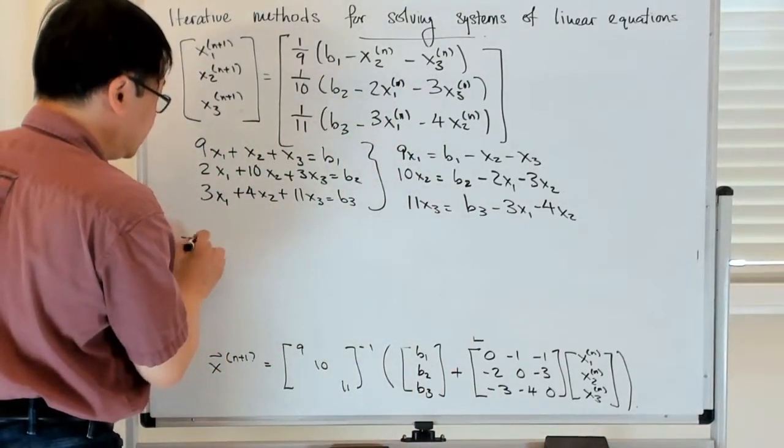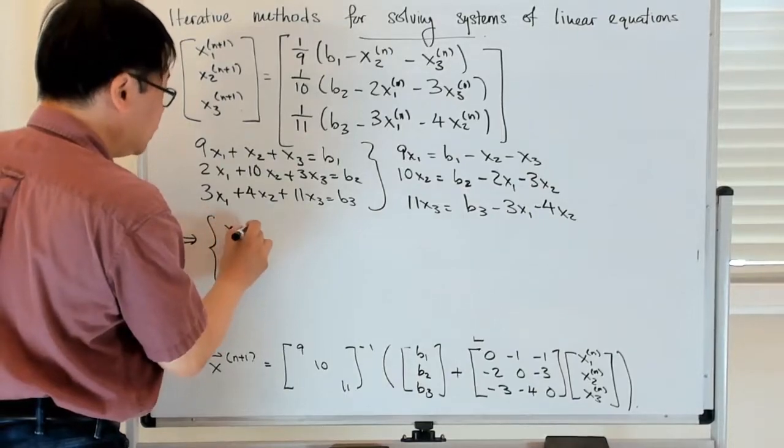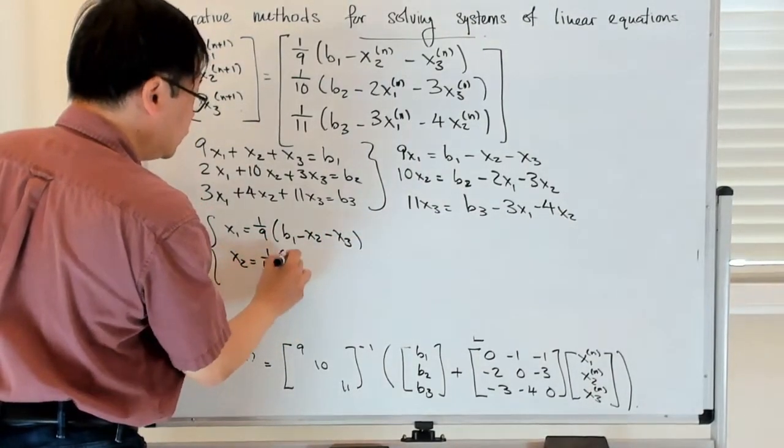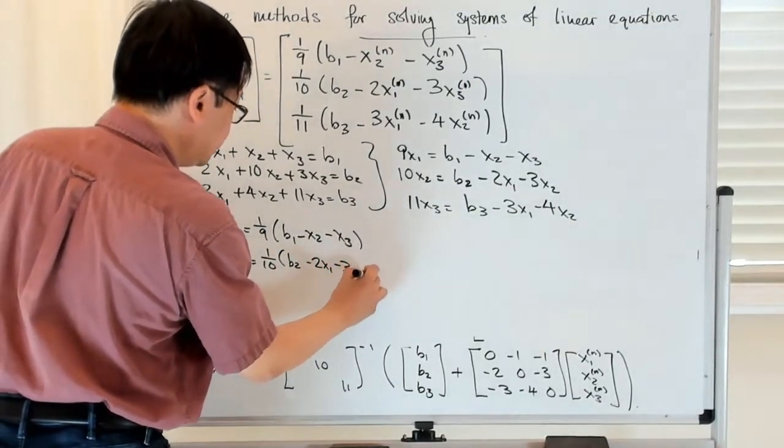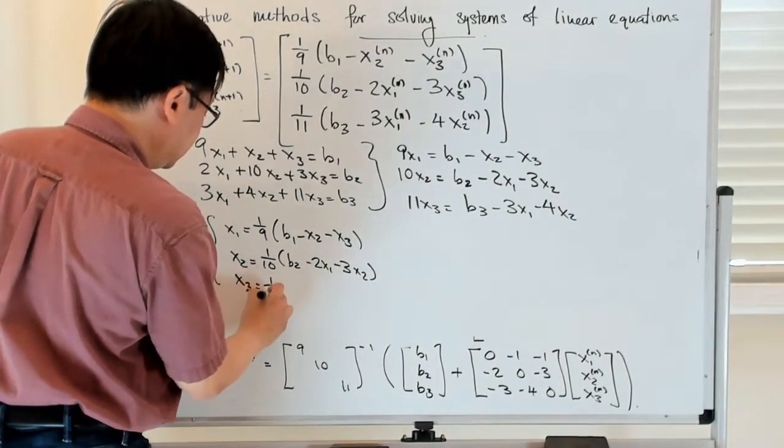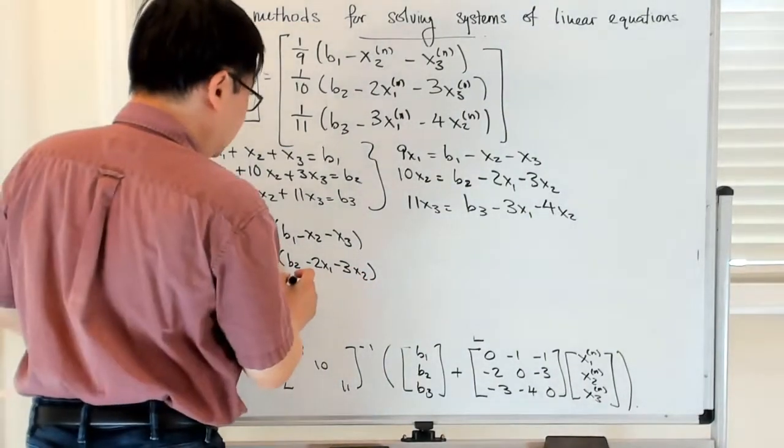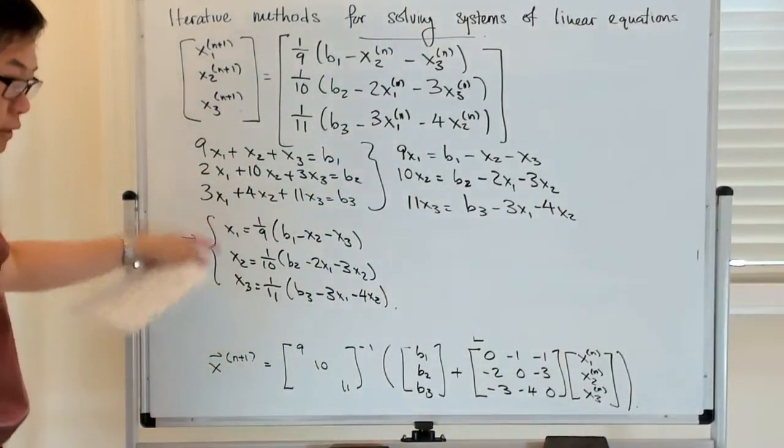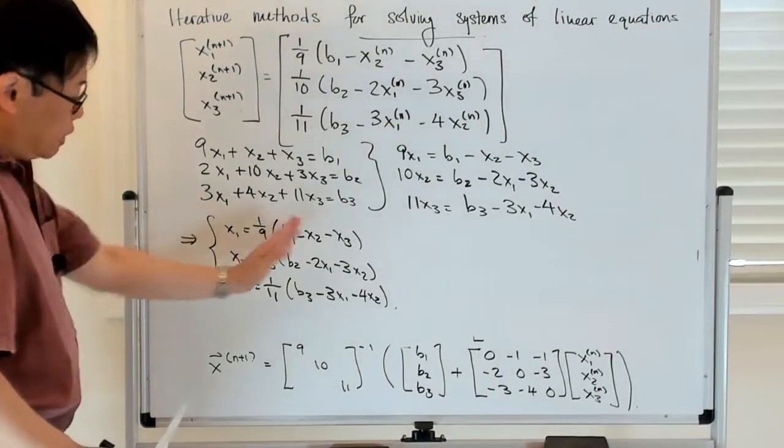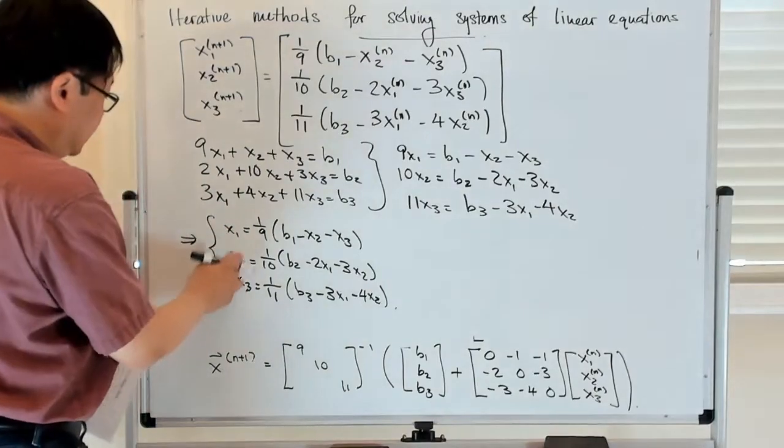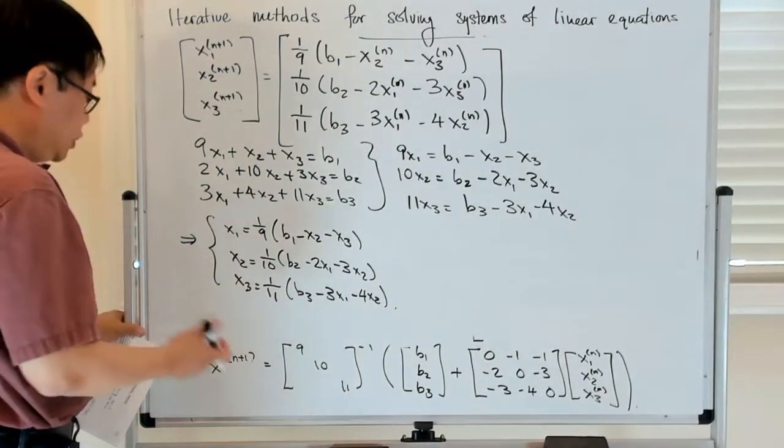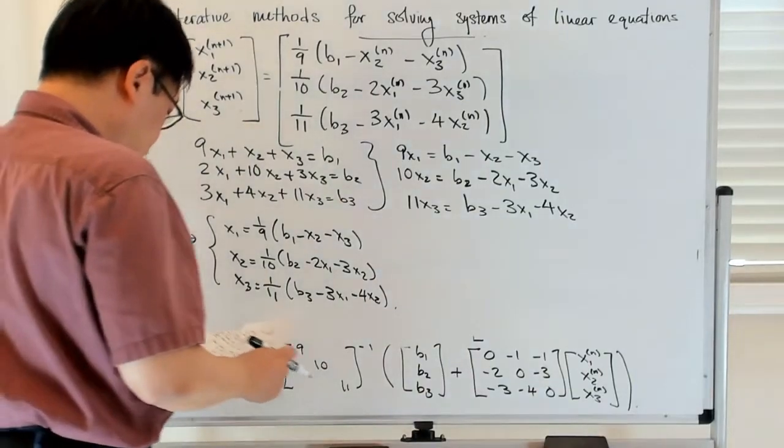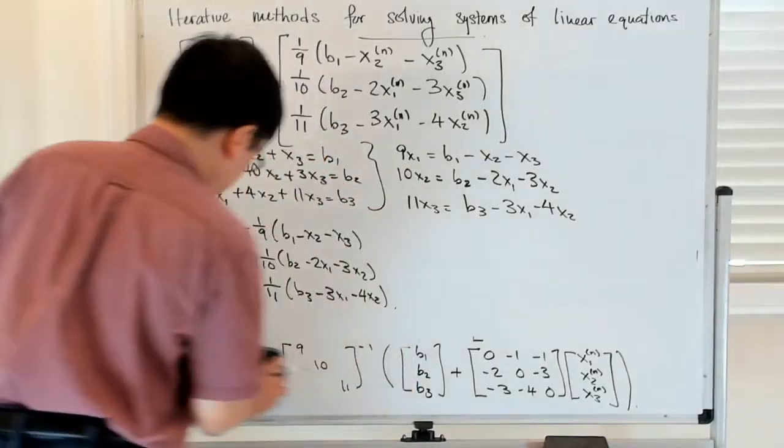So what I've done here is that I have 9X1 = B1 - X2 - X3, 10X2 = B2 - 2X1 - 3X3, and 11X3 = B3 - 3X1 - 4X2. This you can think of as being a little bit like a fixed point equation. So that gives me X1 = (1/9)(B1 - X2 - X3), X2 = (1/10)(B2 - 2X1 - 3X3), and X3 = (1/11)(B3 - 3X1 - 4X2). So this now is a fixed point type condition but for a vector-valued object.